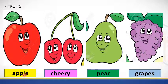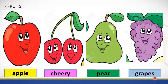Repeat after me, please. Apple. Cherry. Pear. Grapes. We only learned four fruits. Don't forget — vegetable and fruit is also a healthy food. Las frutas y los vegetales también son comidas saludables. Let's continue, please.